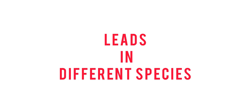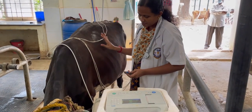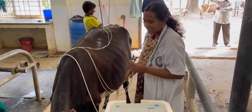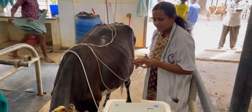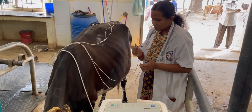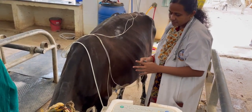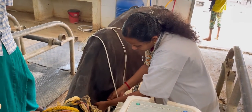In bovine patients, ECG is recorded using a standard base-apex lead system with limb lead one. The animal is kept in a standing position, and no clipping or shaving is required for electrode attachment. The positive electrode of lead one — the left arm — is attached to the skin of the fifth intercostal space just at the level of the olecranon.